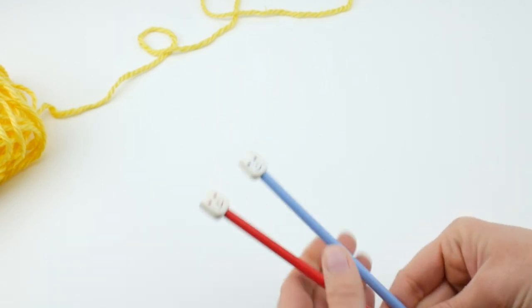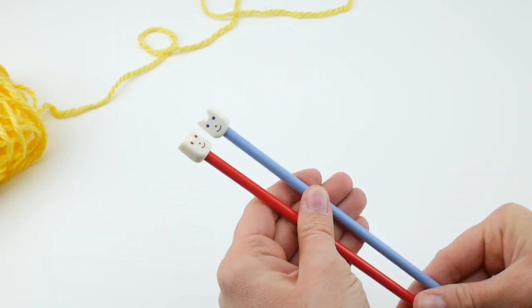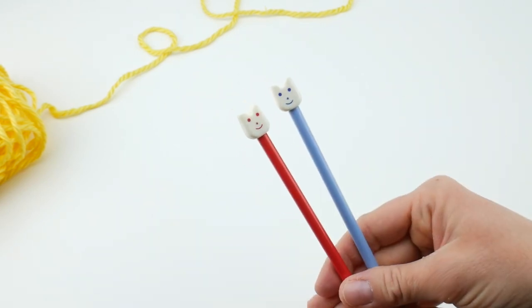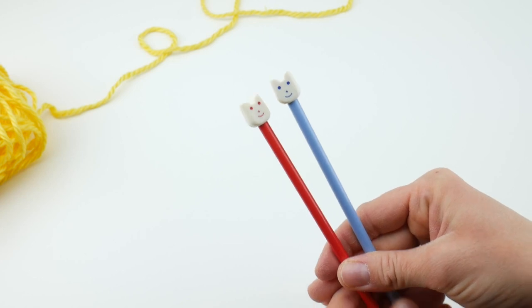These are kids knitting needles from Lion Brand Yarn and as you can see they're really fun. They have this animal topper, cat or bear maybe, I don't know, they're still very cute.